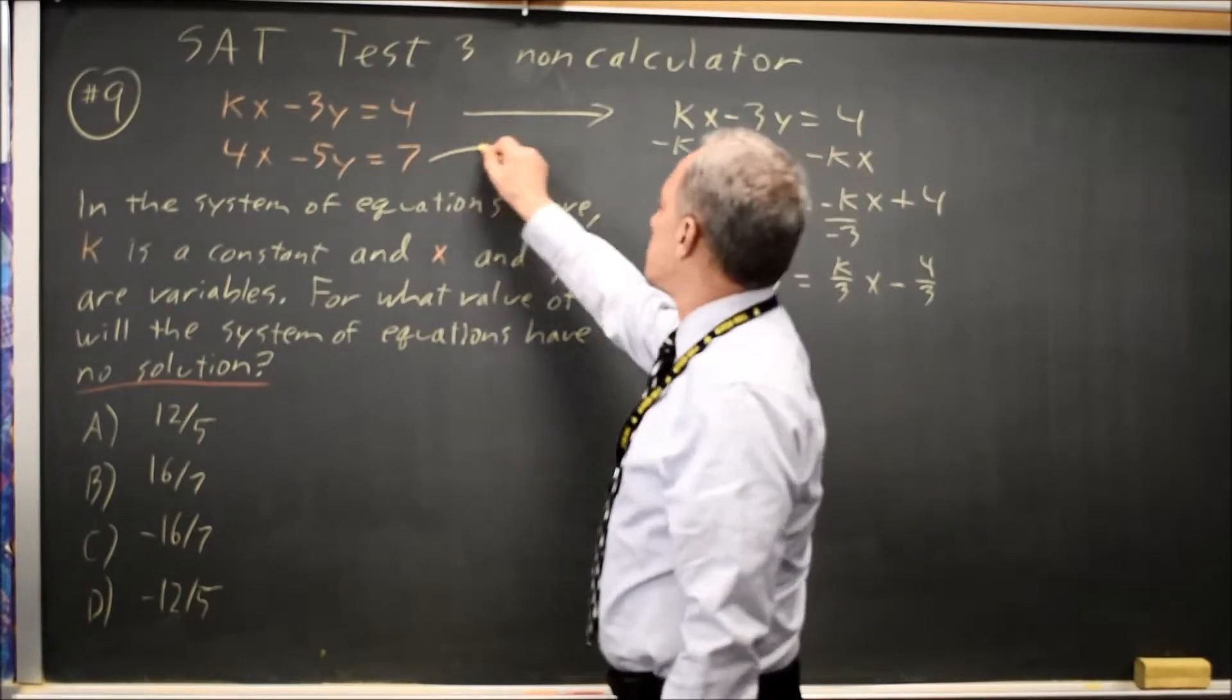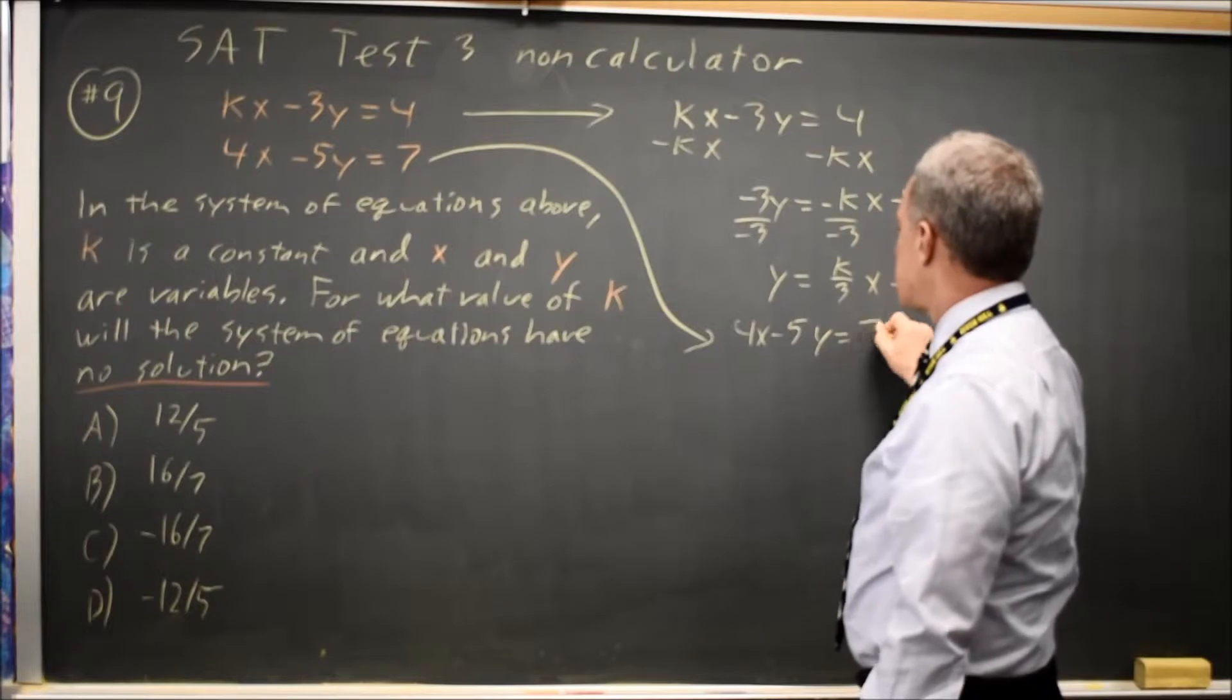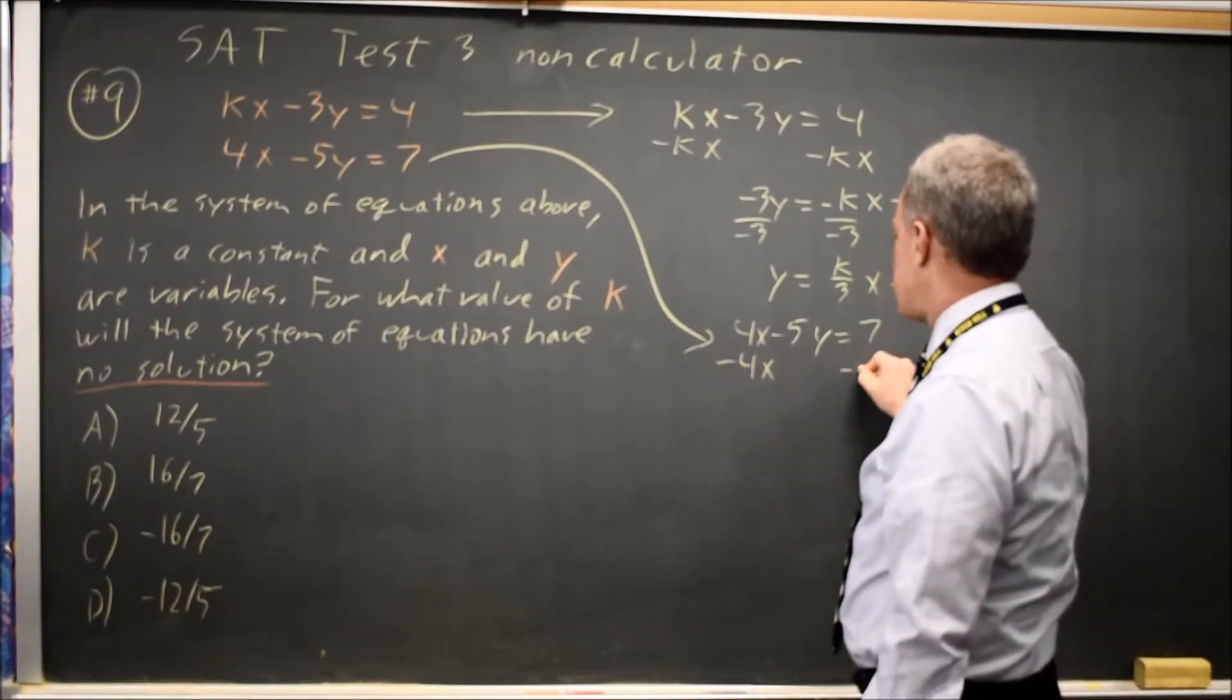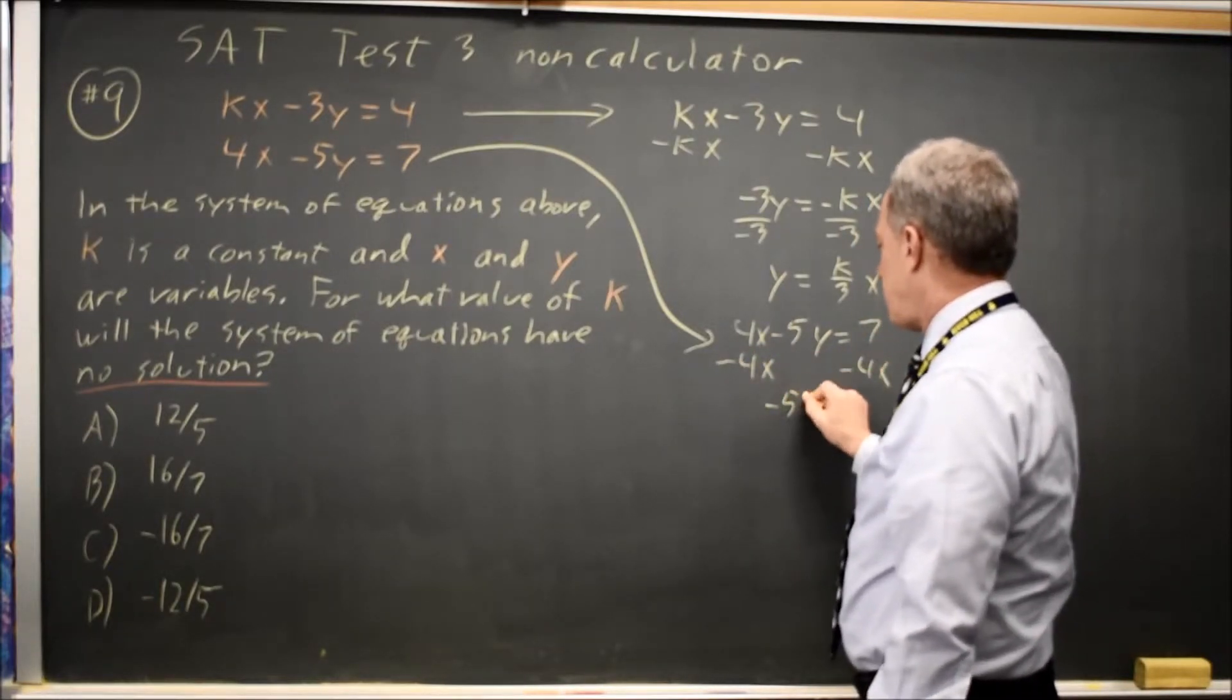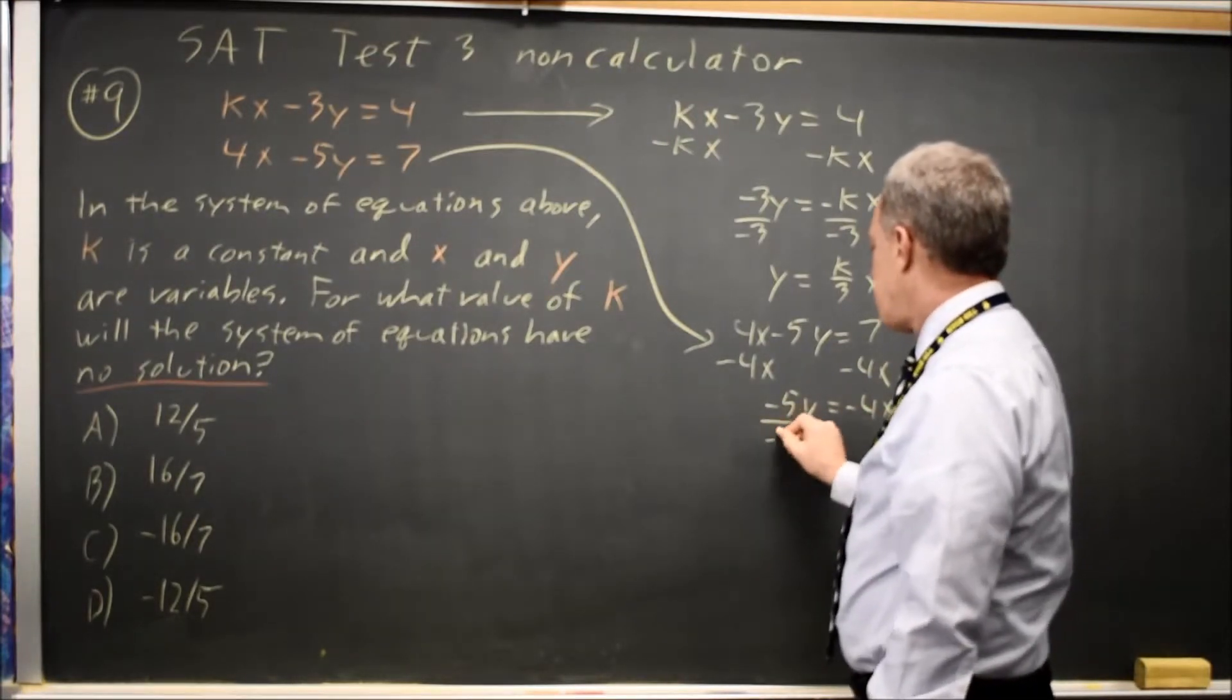Take the second equation, 4x minus 5y equals 7. Subtract 4x from both sides. Negative 5y equals negative 4x plus 7. Divide by negative 5.